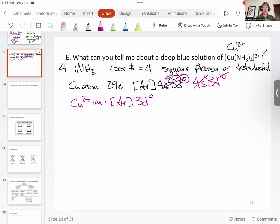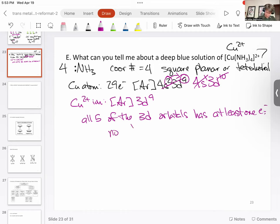So actually, let's just talk about copper for a minute. With 3d⁹, all five of the 3d orbitals have to have at least one electron in it. All five of the 3d orbitals have at least one electron, which means there can be no dsp² hybridization, which is what you need for square planar.